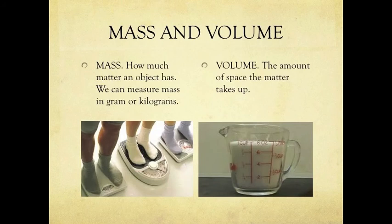Mass is how much matter an object has. We can measure mass in grams or kilograms. Volume is the amount of space the matter takes up.